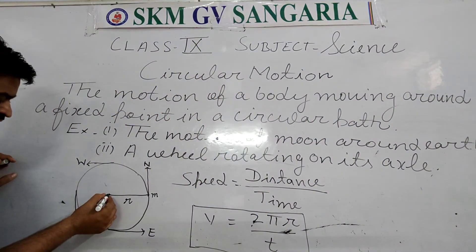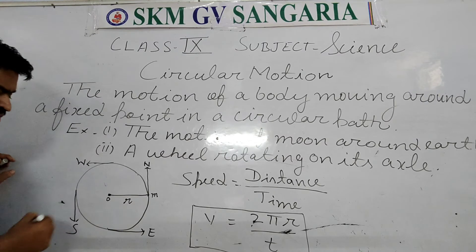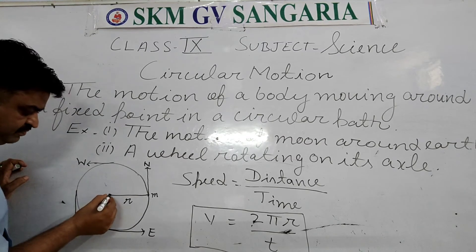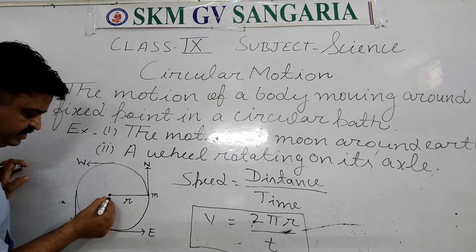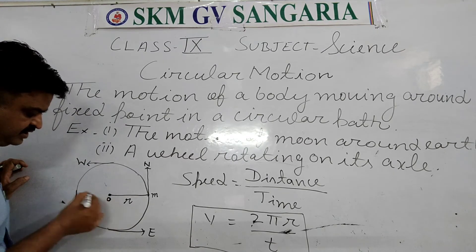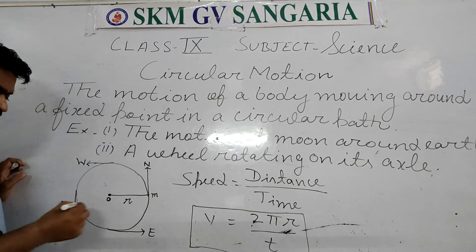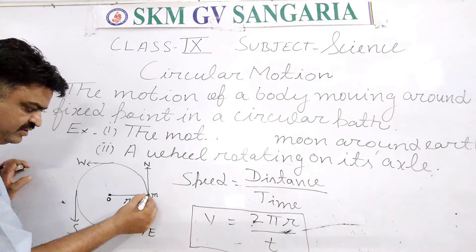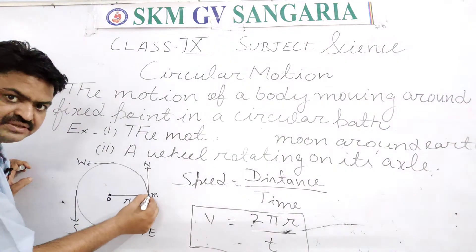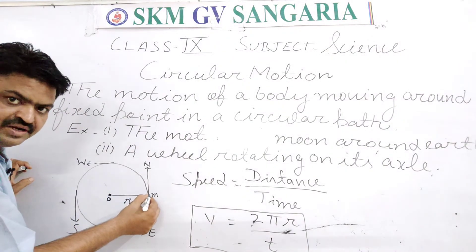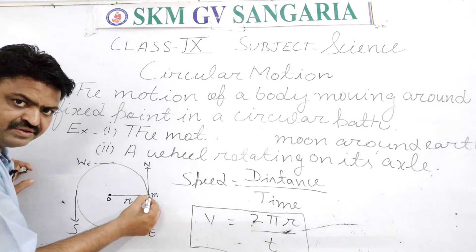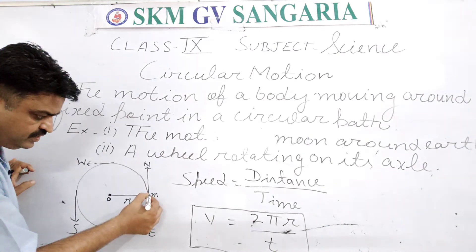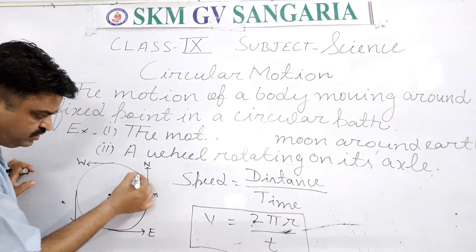There is one diagram drawn here. This is the fixed point of the circular track, and we symbolize it by O. There is one particular object that has mass M, moving in a circular path.